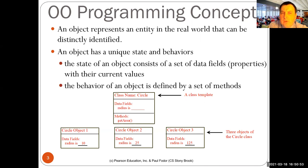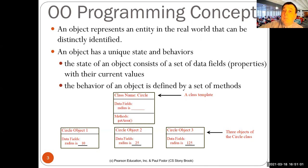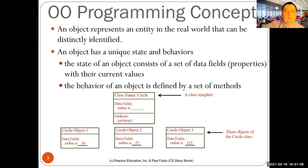In object-oriented programming, an object represents an entity in the real world that can be distinctly identified. For instance, if you have a Person class, an object could be person Paul, person John, person Bill, and so on.